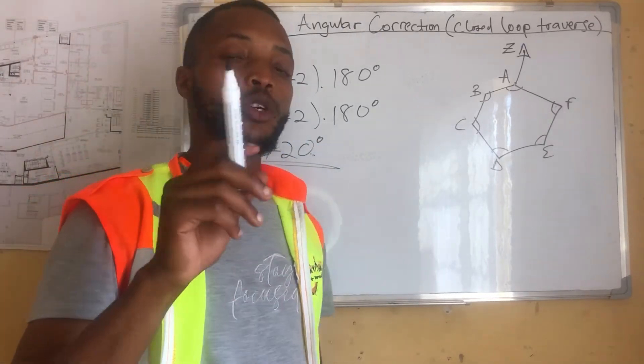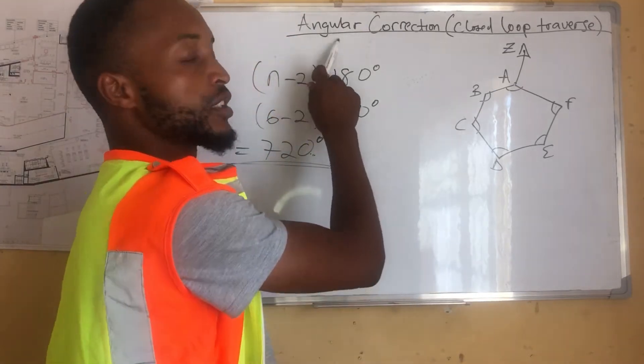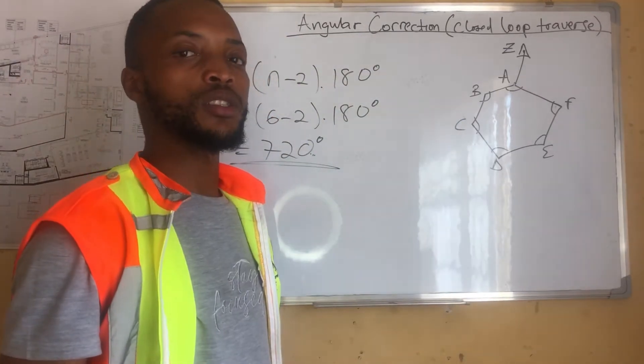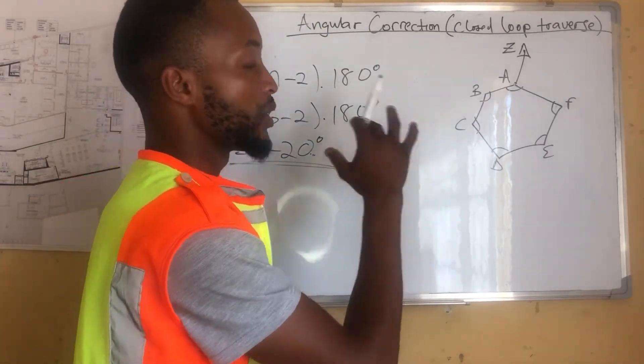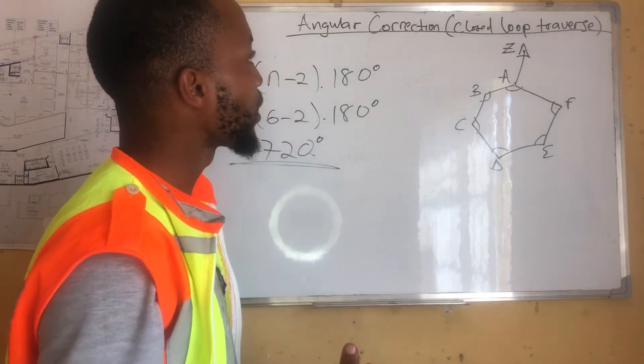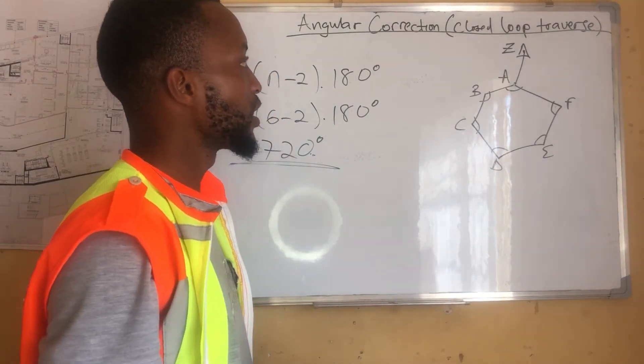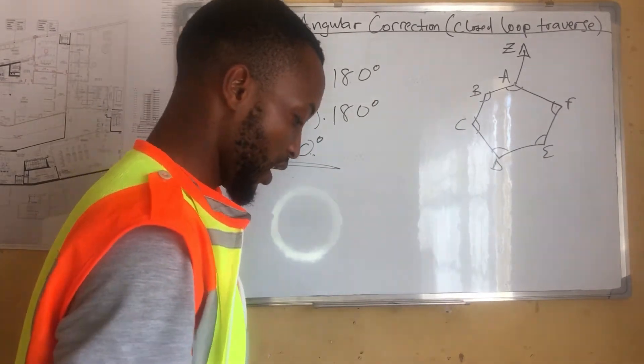And if we don't get the 720, that's where it comes here, the angular correction, that we add or subtract the misclosure, the angular misclosure, depending on how much misclosure it is. If it's below the 720, or is it above 720?